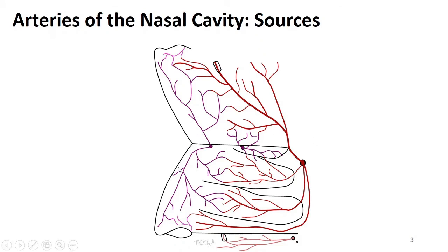In this image, anteriorly here there's the nose and the nares, or the nostril. This would be the hard palate, and then these are representing the nasal concha. Now imagine that we made a cut and then flipped up like this, so there is the anterior point of the nose here and the septum has been reflected up.